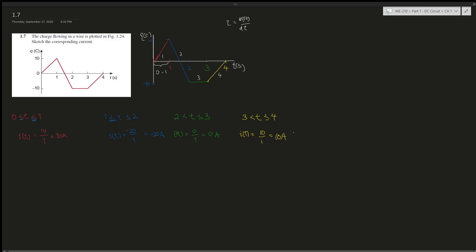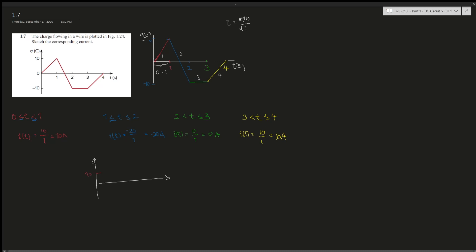Now that we have all four current values, we can sketch the graph. I'll do a simplified version using the same colors. The y-axis shows 10A and 20A. From 0 to 1 it's at 10A, from 1 to 2 it drops to -20A, from 2 to 3 it's at zero on the axis, and from 3 to 4 it returns to 10A. Remember to draw dotted lines at the interval boundaries.